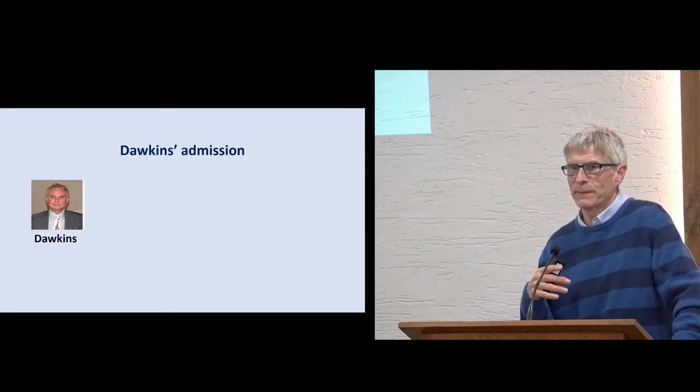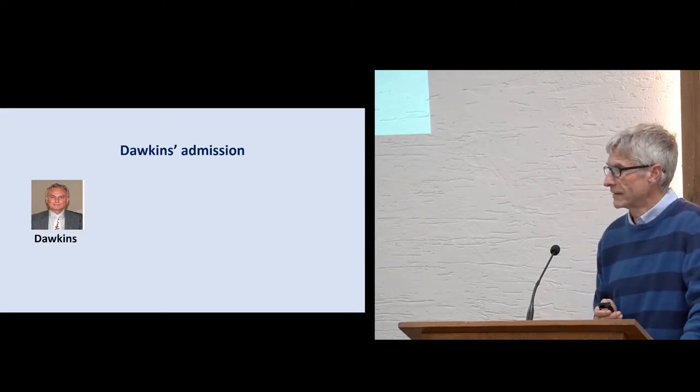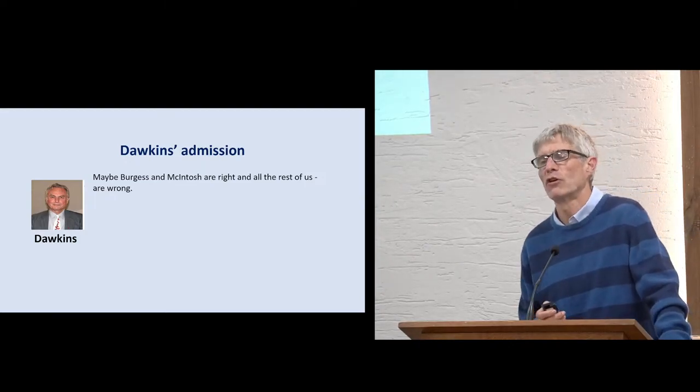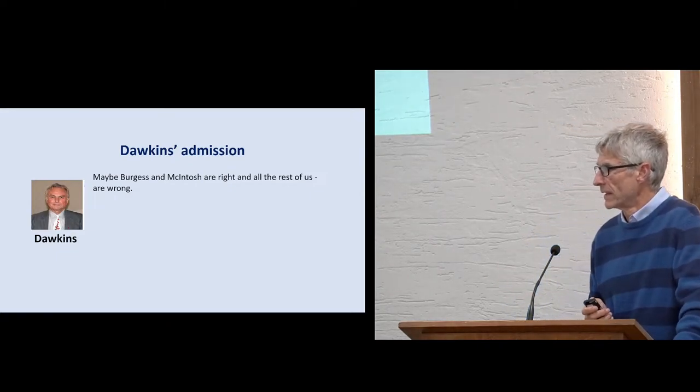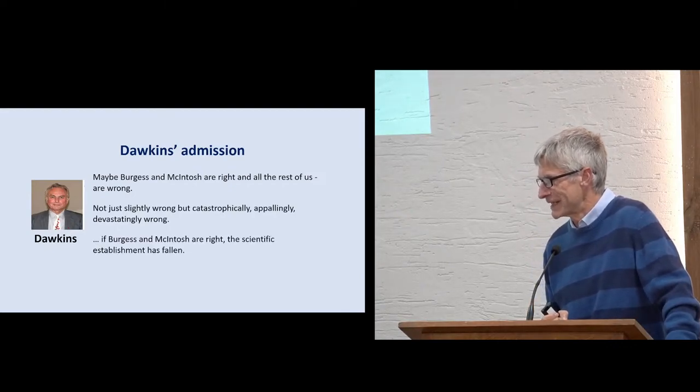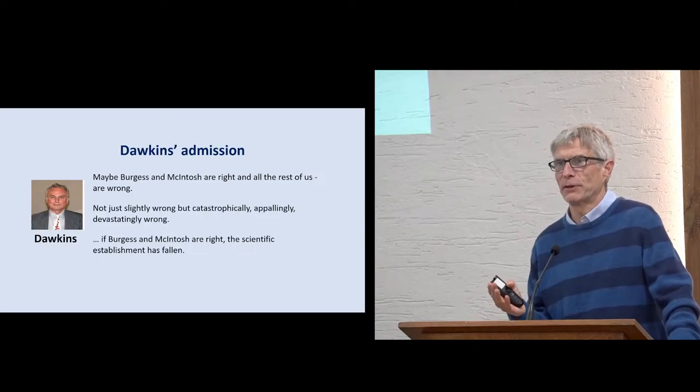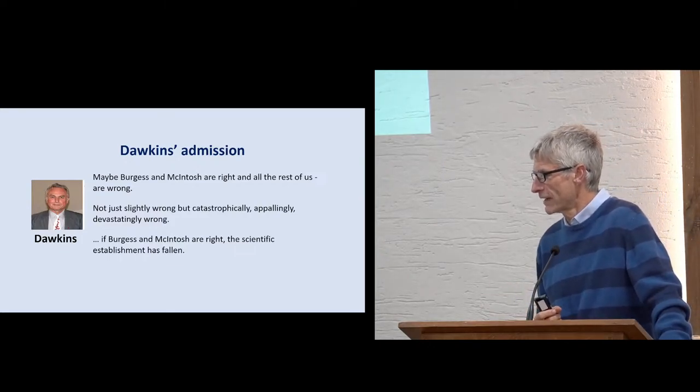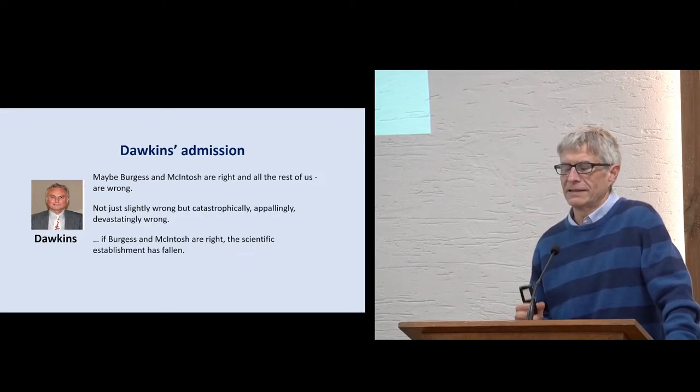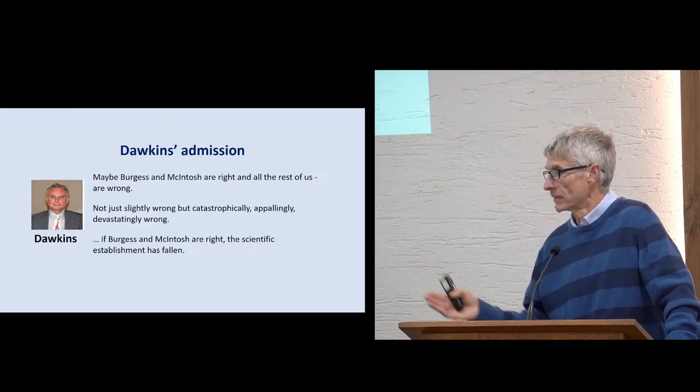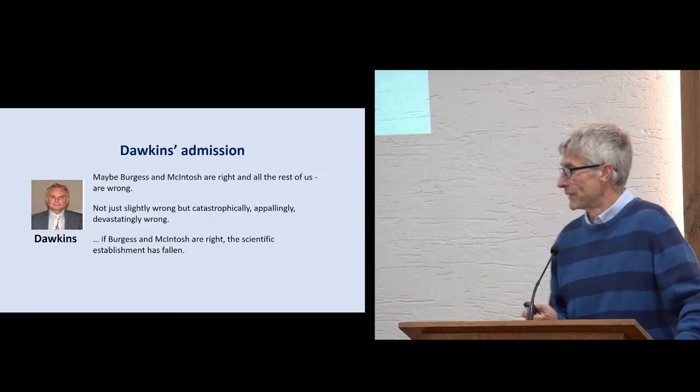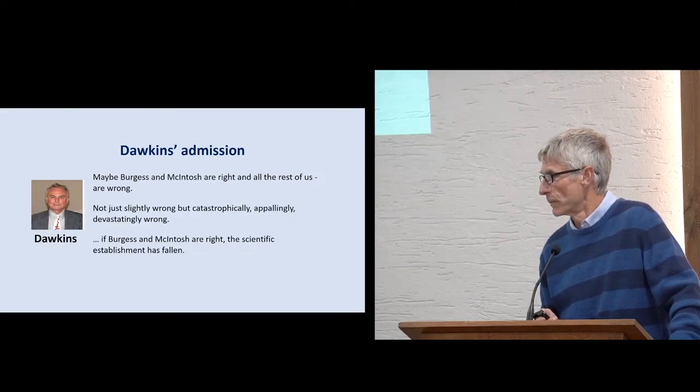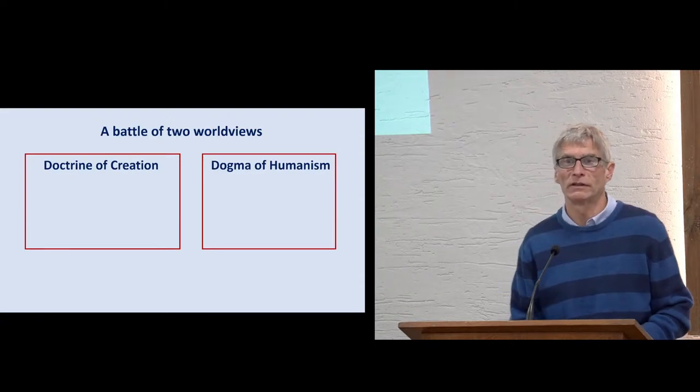I've had one kind of, via a newspaper, a little bit of a debate with Dawkins and he said a really interesting thing. He said maybe Burgess and McIntosh are right and all the rest of us are wrong. This was in a debate in the Guardian newspaper. Not just slightly wrong, but catastrophically, appallingly, devastatingly wrong. He's saying, if Burgess and McIntosh are right, we've been teaching this rubbish theory all of these decades. If Burgess and McIntosh are right, the scientific establishment has fallen. What he should have said is to do with evolution. So basically, I agree with what Richard Dawkins is saying here. Because I think we are right and I think the whole theory of evolution needs to fall. So all this is a battle of two world views. This is the most important thing to remember.